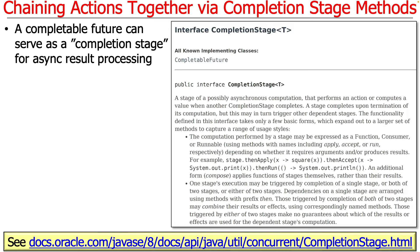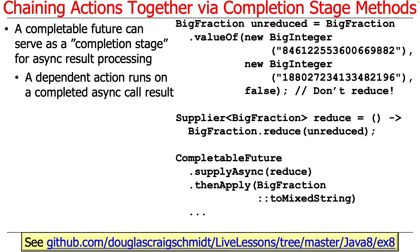A CompletableFuture can serve as a completion stage for asynchronous result processing. The basic idea is that a dependent action runs when a previously invoked asynchronous call completes and returns a result. A dependent action runs on a completed async call result — when a previous asynchronous call finishes, a dependent action can be triggered to handle the result of that previous asynchronous stage.